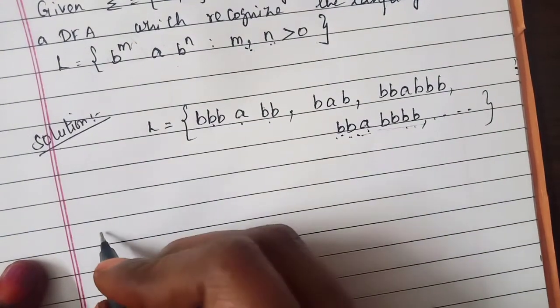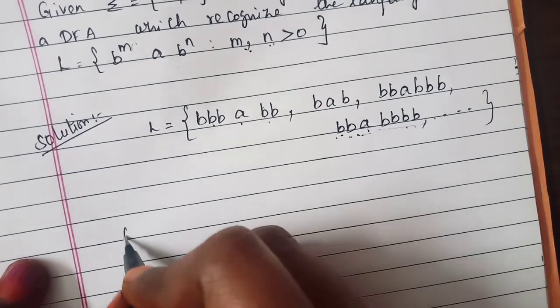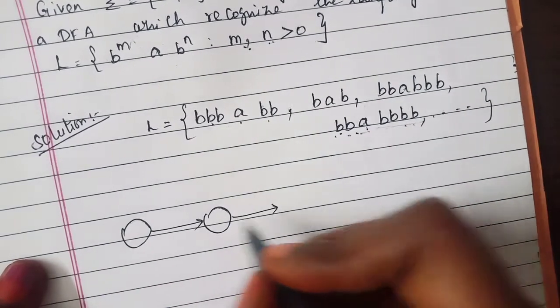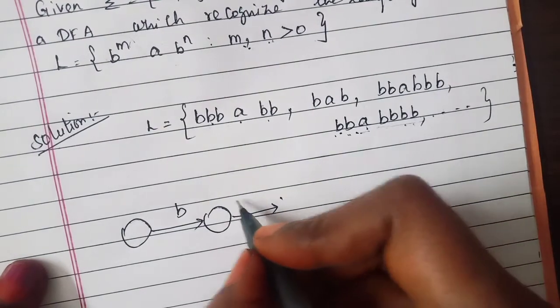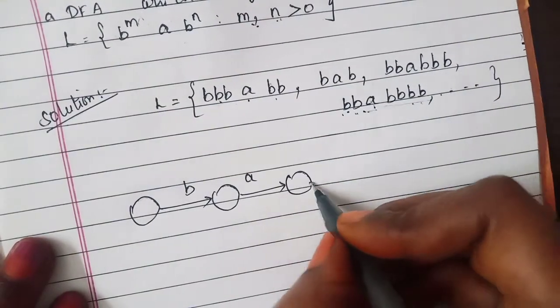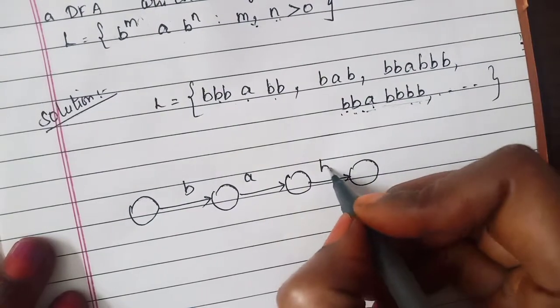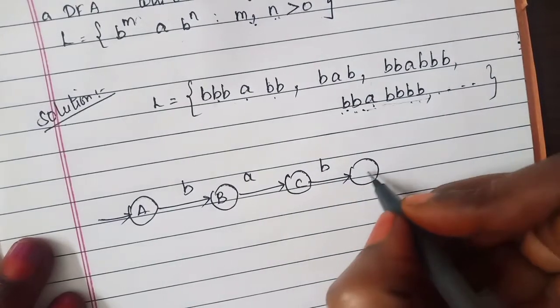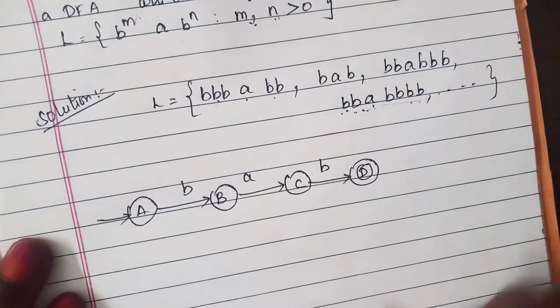So here we need to draw DFA for this. So we will have b and you are having only one a, after that you are having another b. I will name the states as A, B, C and D.